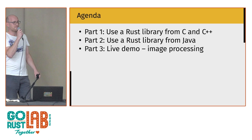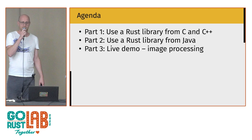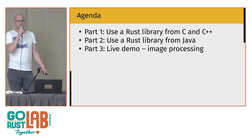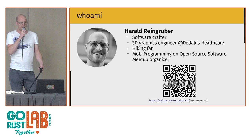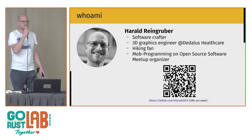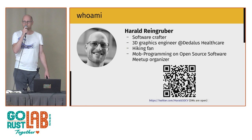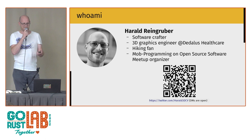Our talk will be structured in three parts: first, how to use a Rust library from C and C++; then how to use a Rust library from Java; and at the end there will be a short live demo comparing different image processing algorithms. My name is Harald Rein Gruber, I'm a software crafter and 3D graphics engineer at Dedalus Healthcare, a hacking fan and organizer of a demo programming on open source software meetup. You can reach me on Twitter — my DMs are open.